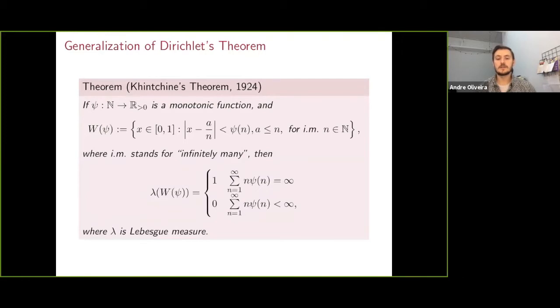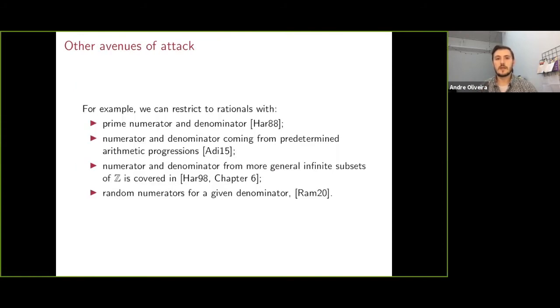Another way to try to generalize this is instead of modifying the quantity or the degree of accuracy, what if we look at different subsets of the rationals?